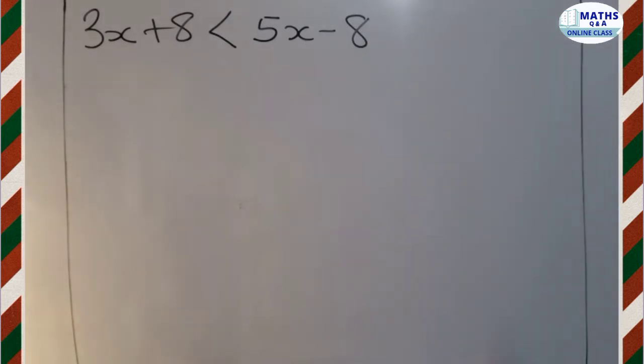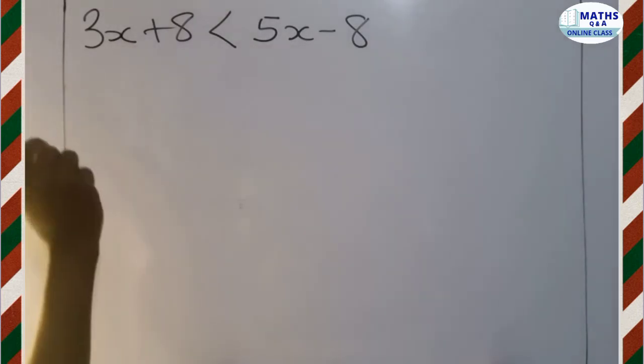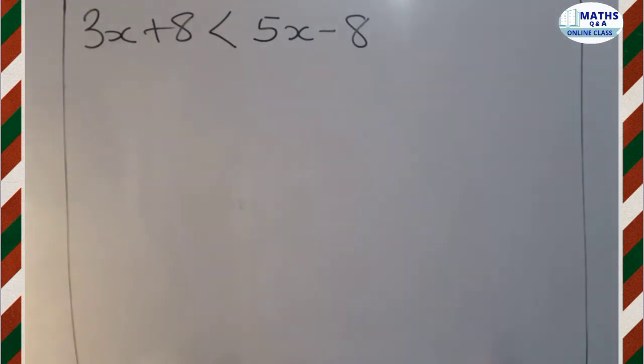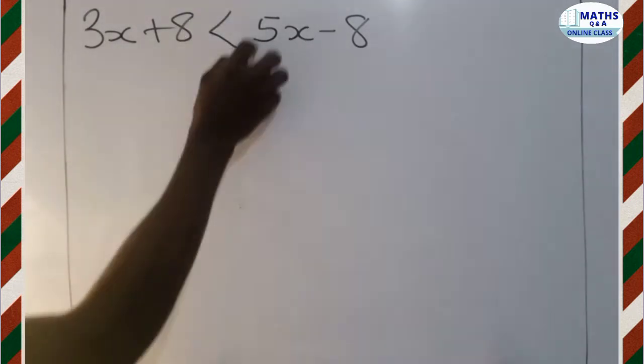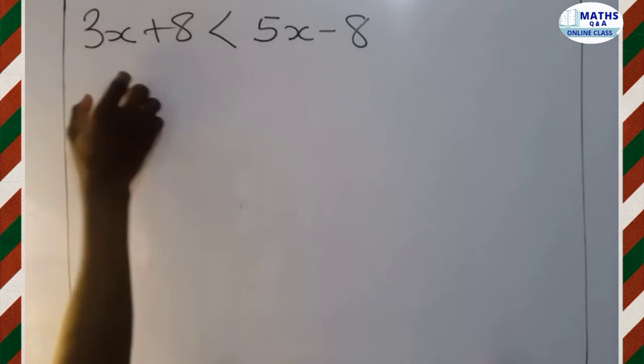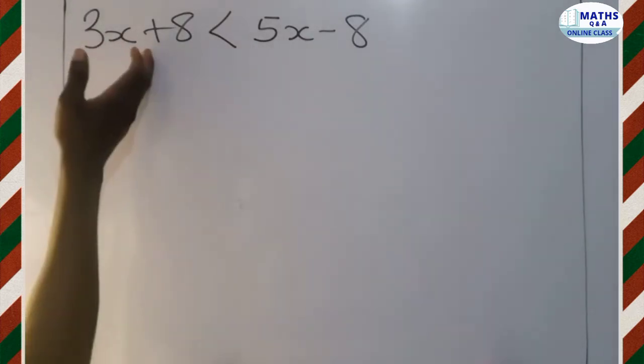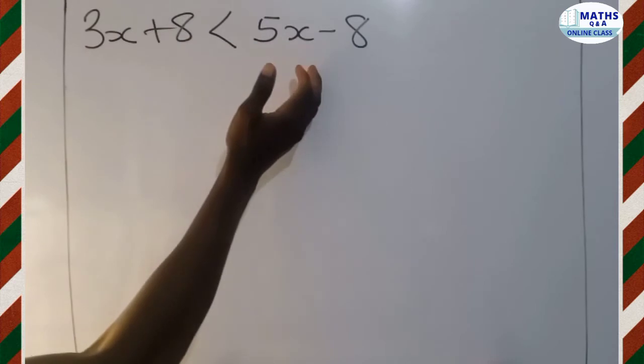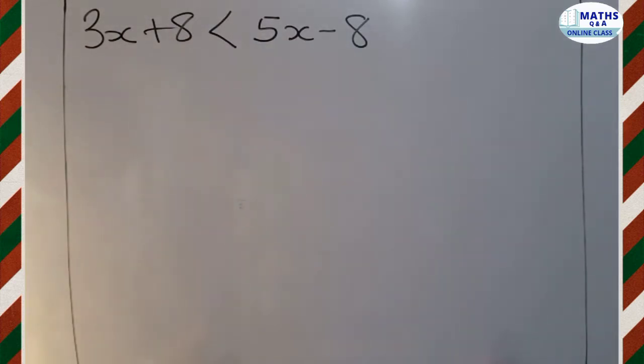So what you are going to do is that those having x in them, those terms having x in them, you write them at one side of the inequality sign. And then you write the constant ones at also another side of the inequality sign. You are the one going to decide as to where you want them to be. Whether you want them to be at the left hand side or the right hand side. So let me decide.